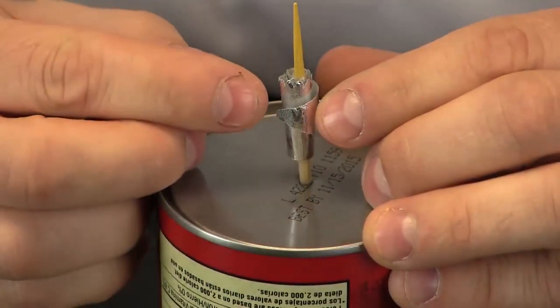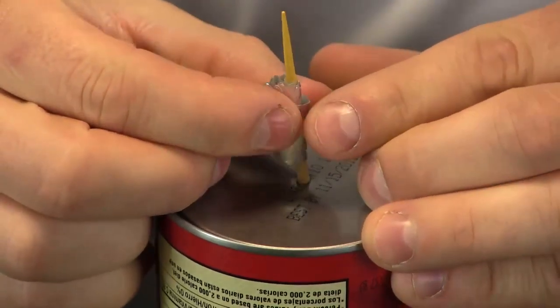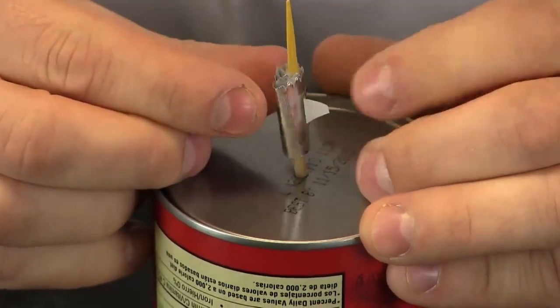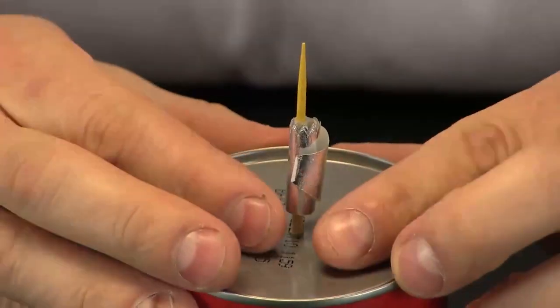We have zoomed in so you can see this next step. I need to take the tip of my pointer, and what I am going to do is bend it so it sticks out on my can.